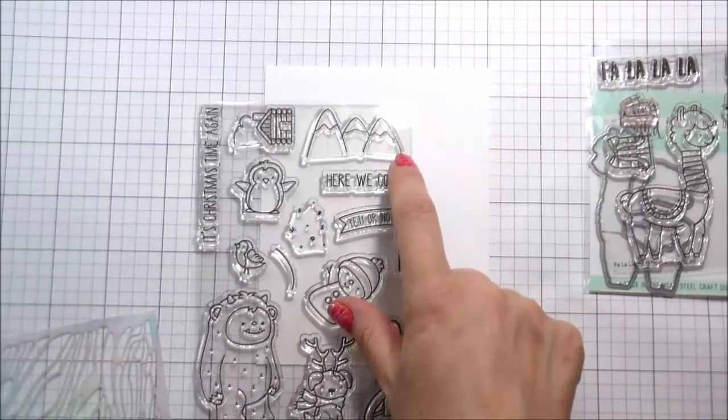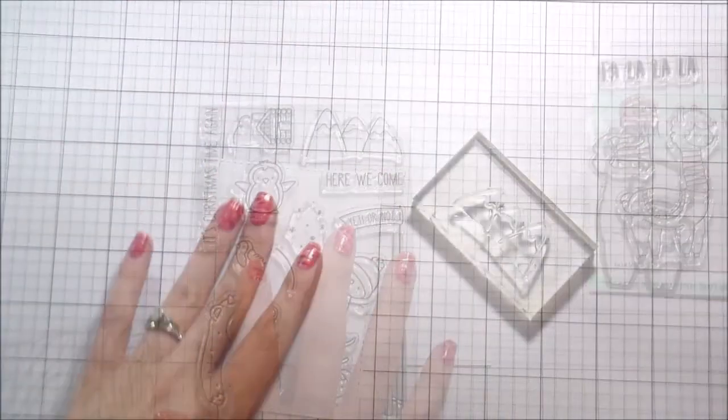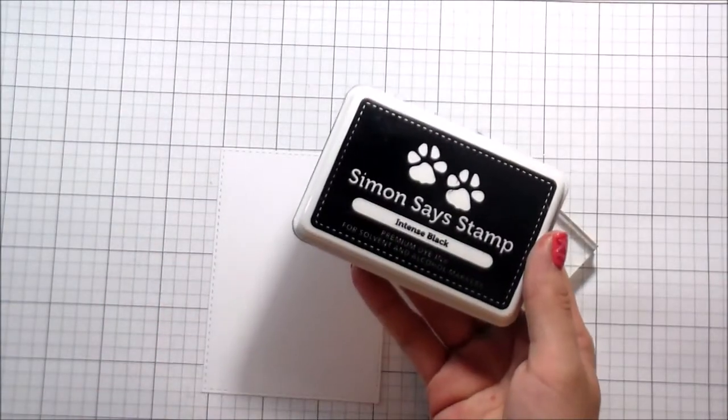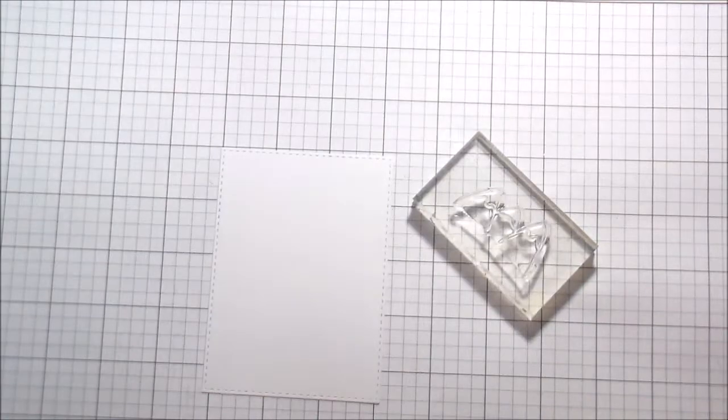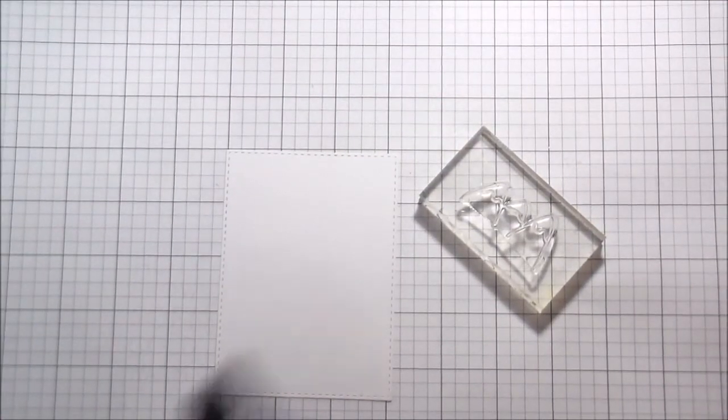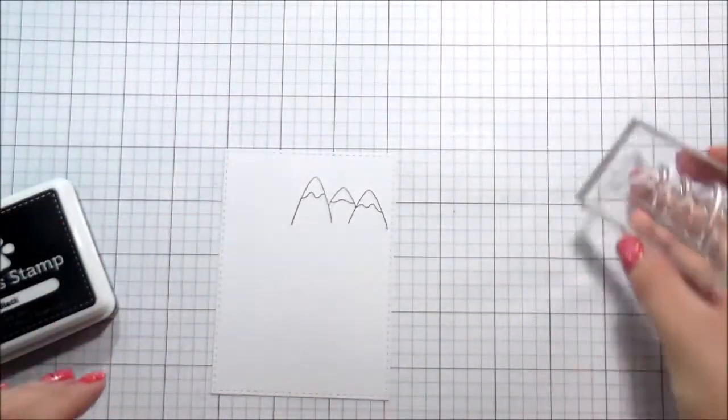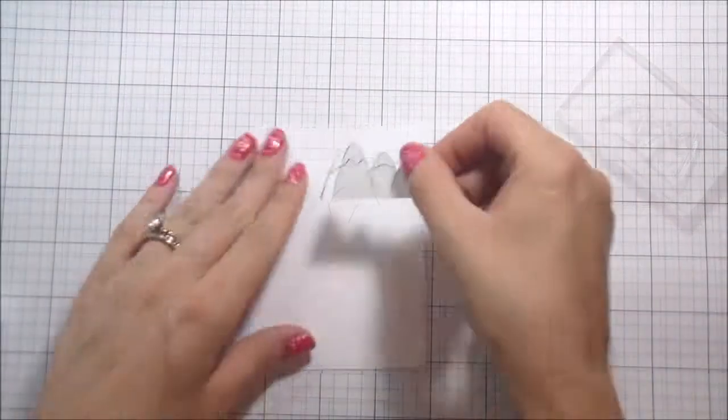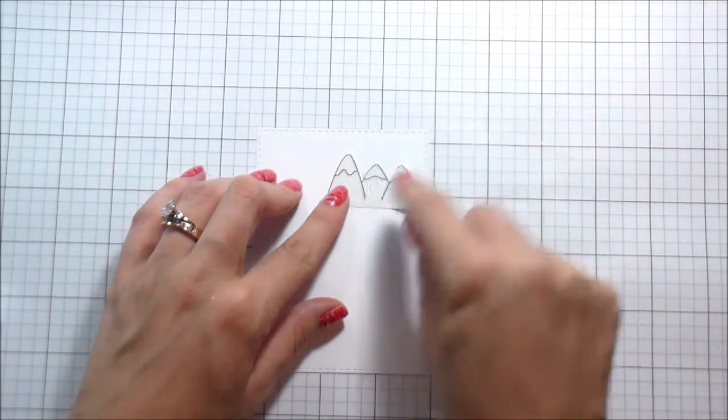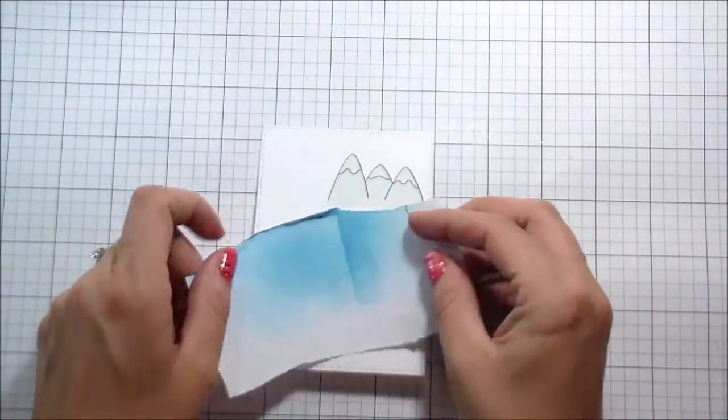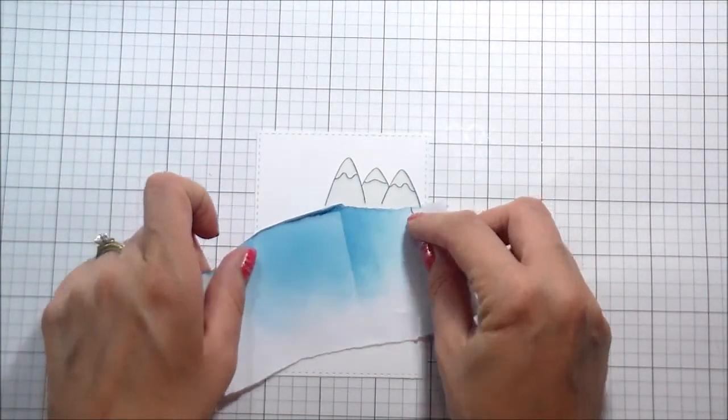The focal point of the card is the Fa La Lama set, but I'm also using the mountains from another new set called Get Yeti, which is totally adorable. These little mountains are included in this set. I thought they would be cute to build a little scene. I'm stamping on Neenah 80 pound solar white cardstock that I have cut out with a stitched rectangle die.